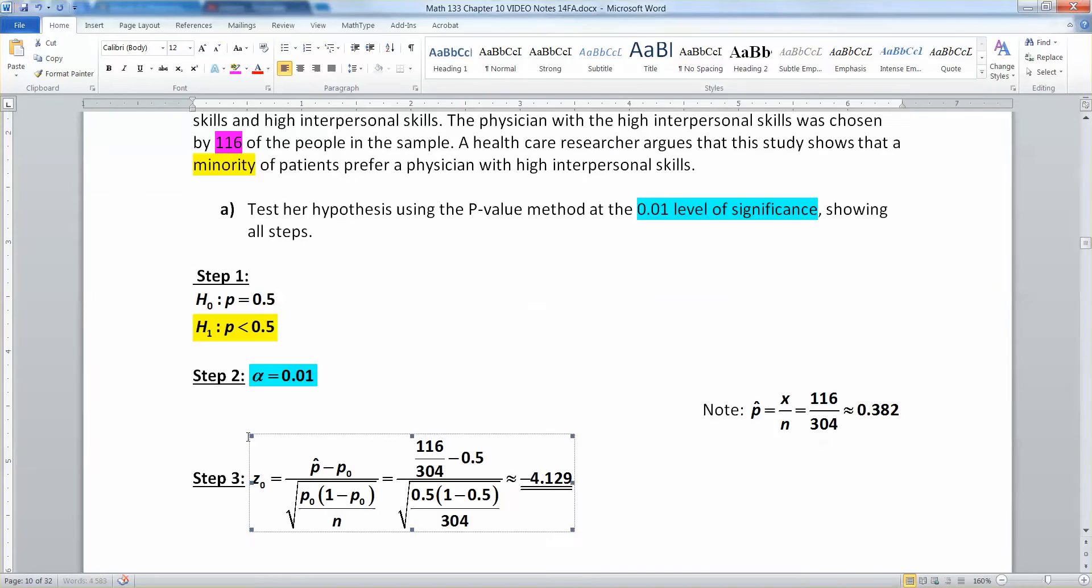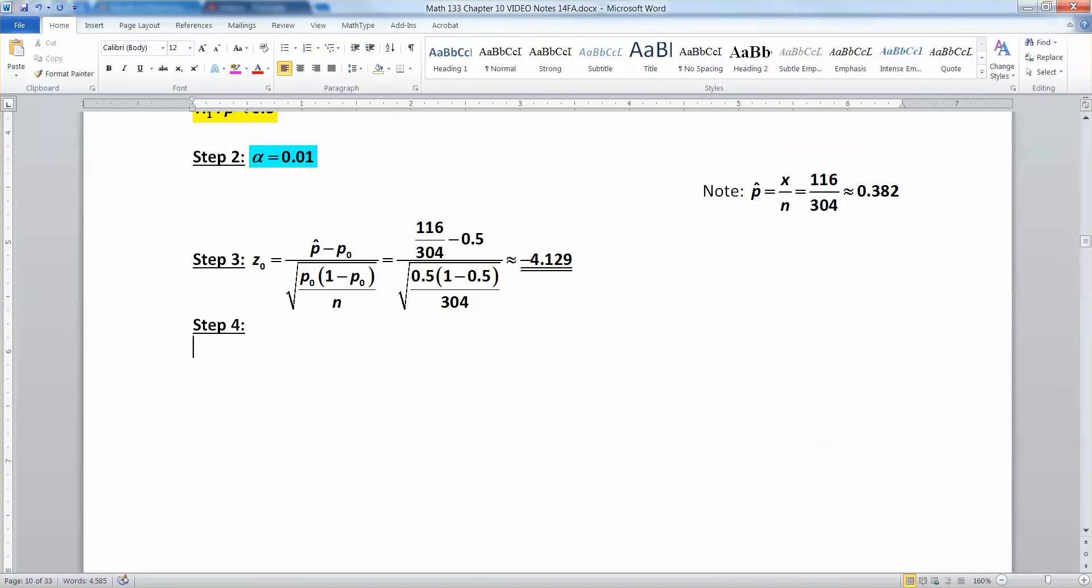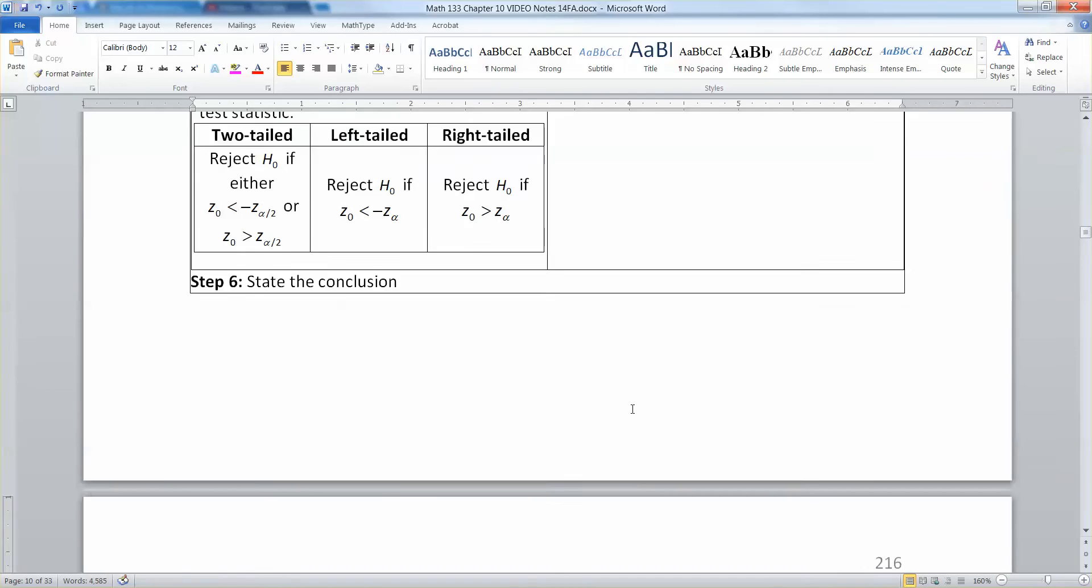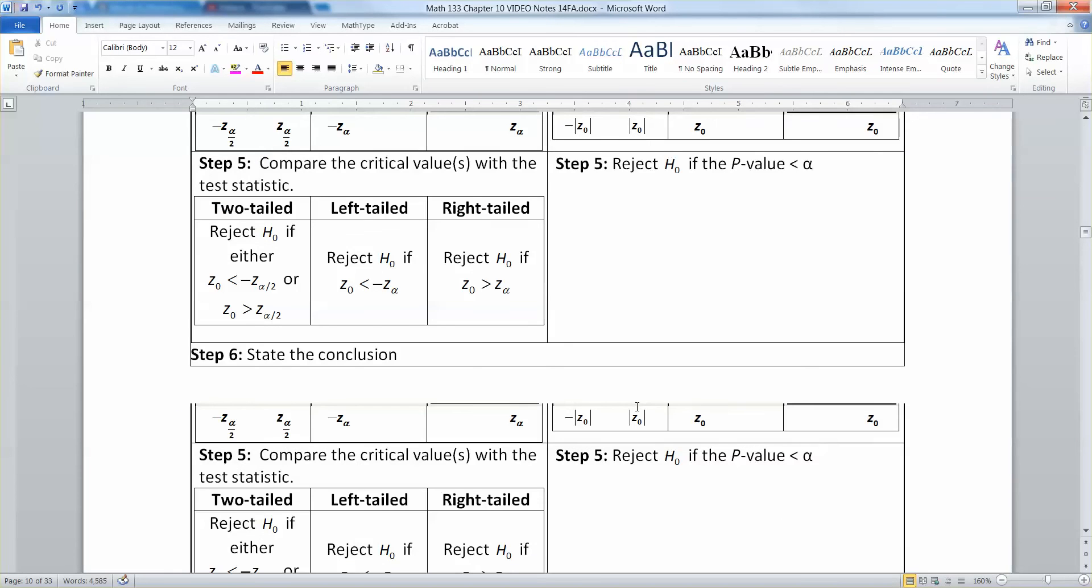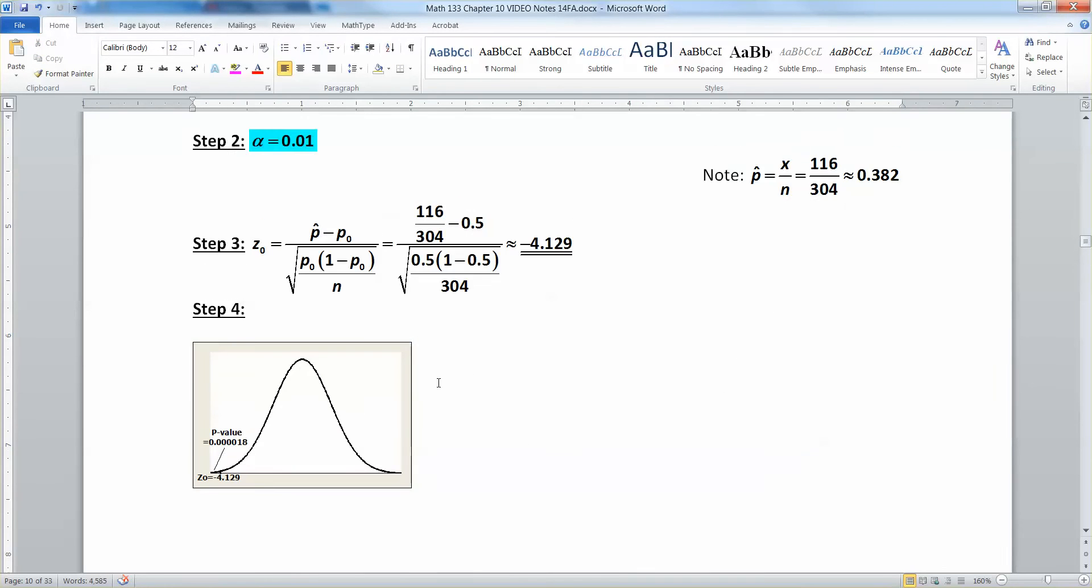Alright. Now, that's step three. Step four. We need to draw a picture. And, it has to look just like the one that's on the inferential statistics sheet. So, we are doing a p-value method. So, you're going to have to pick one of these two over here on the right. And, you're going to want the one that's left-tailed. So, it's going to look like that.